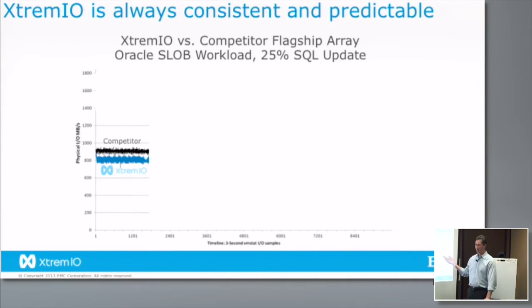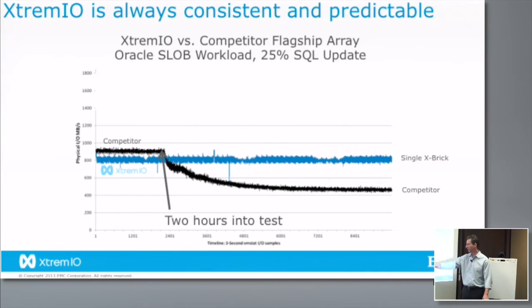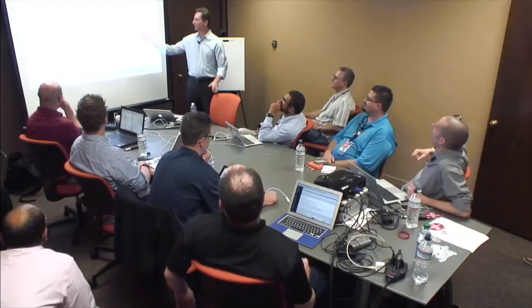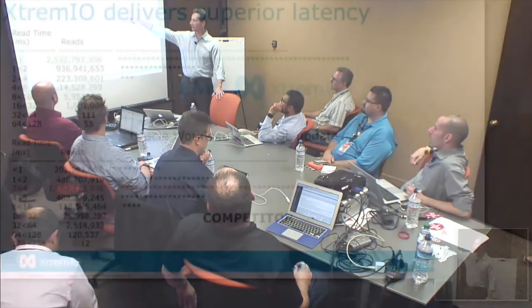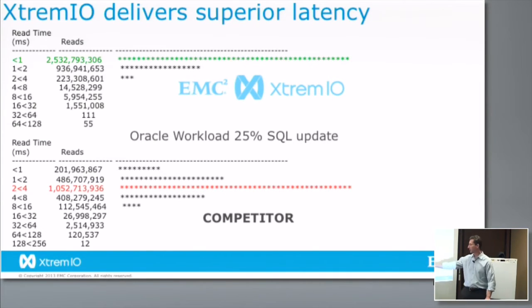Another POC with a different competitor on an Oracle workload: the competitor's line was actually a little bit higher than a single X-Brick at the beginning of the test. But two hours in, when it had to start dealing with garbage collection inside the array, it fell off dramatically. The single X-Brick just kept chugging along. Then we tried it with a two-brick cluster and you can see very different profiles. The latency histogram shows XtreameIO predominantly sub-millisecond with very few large outliers, while the competitor's array tended to run more like three or four milliseconds — three times higher latency with bigger outliers.